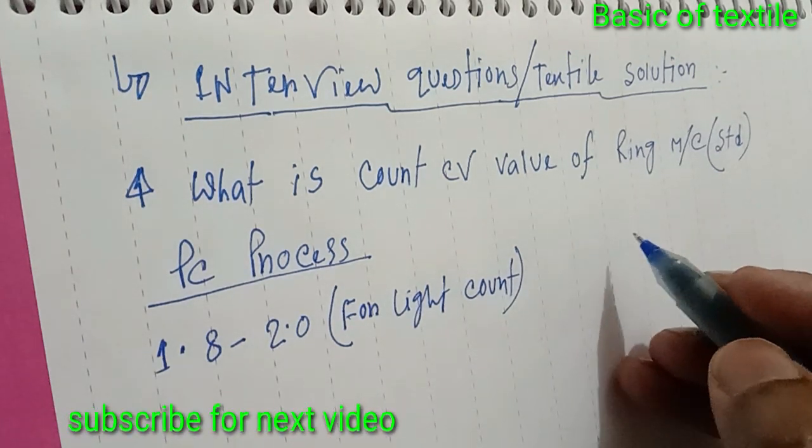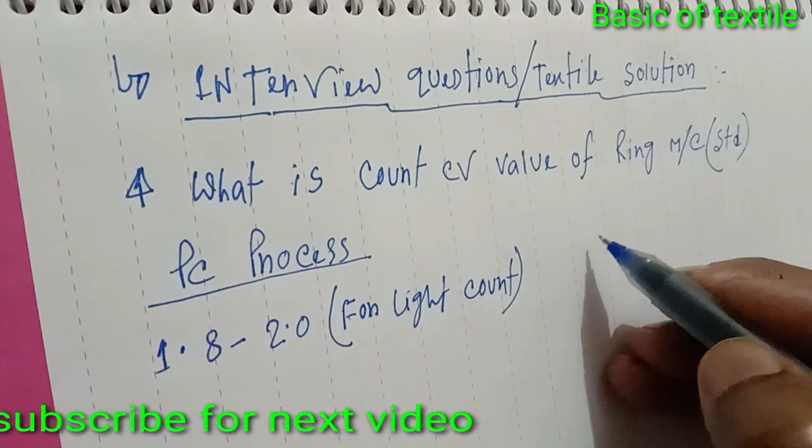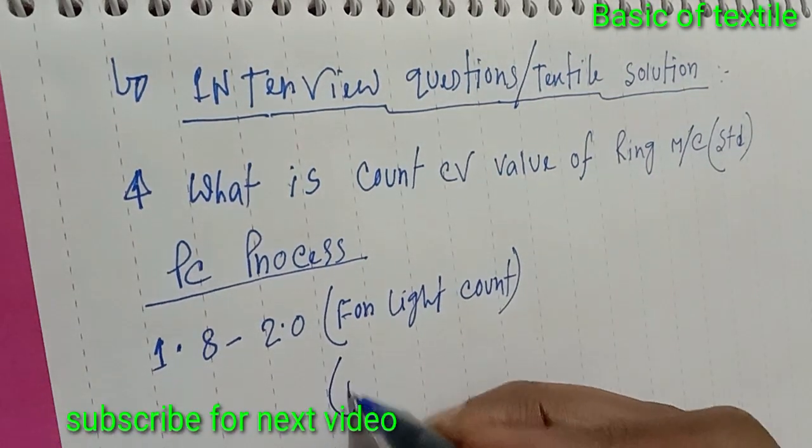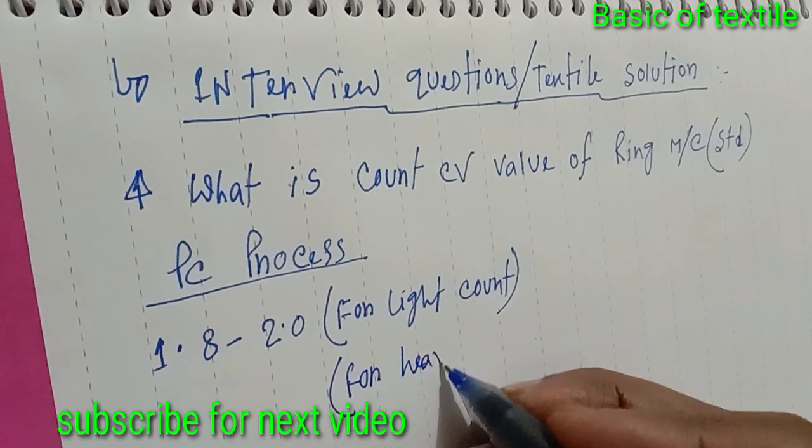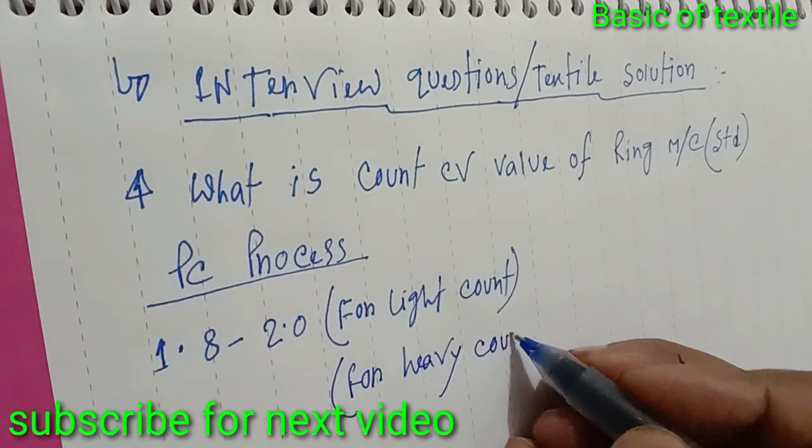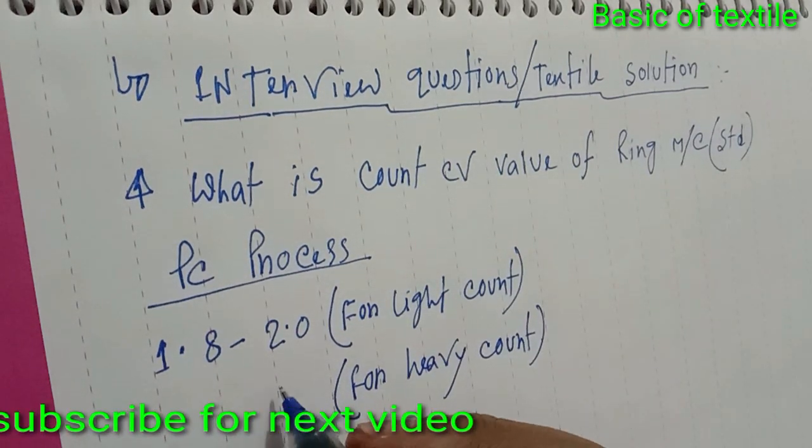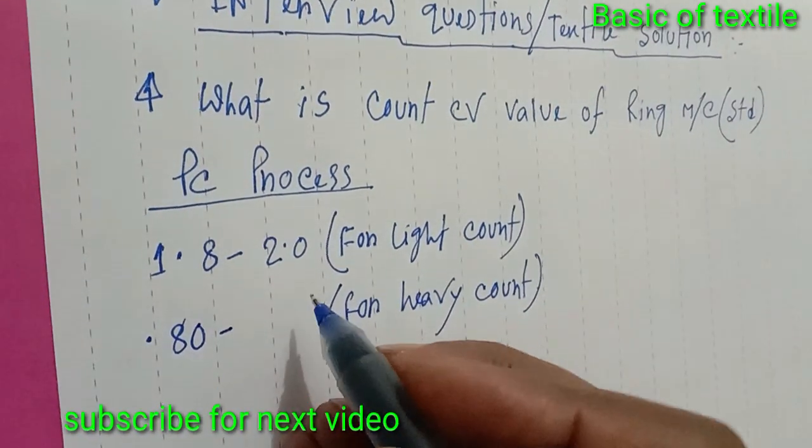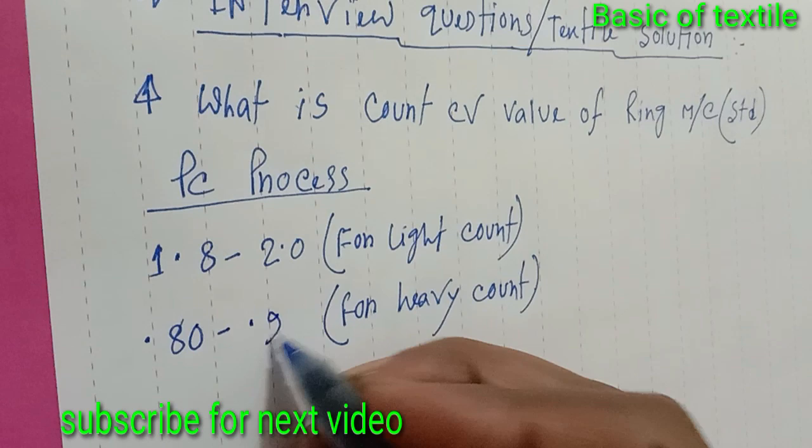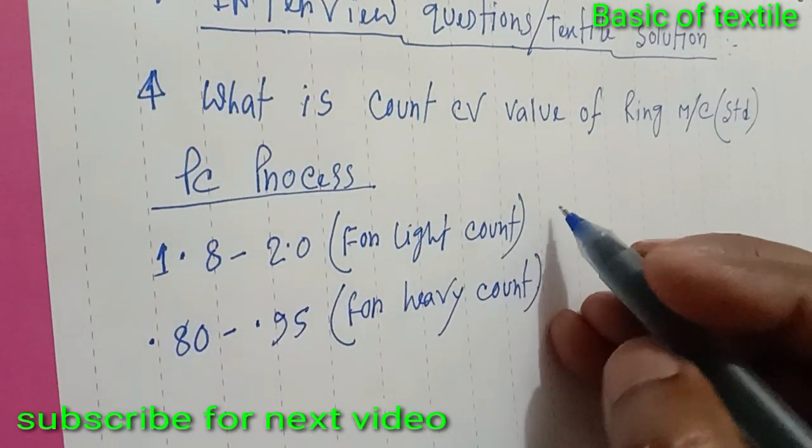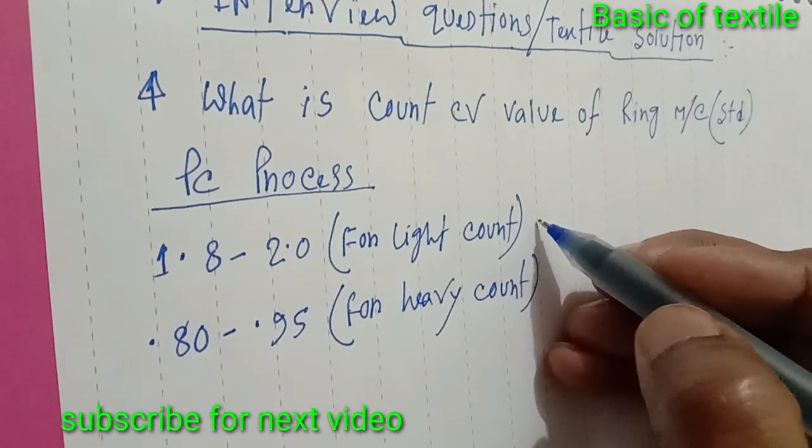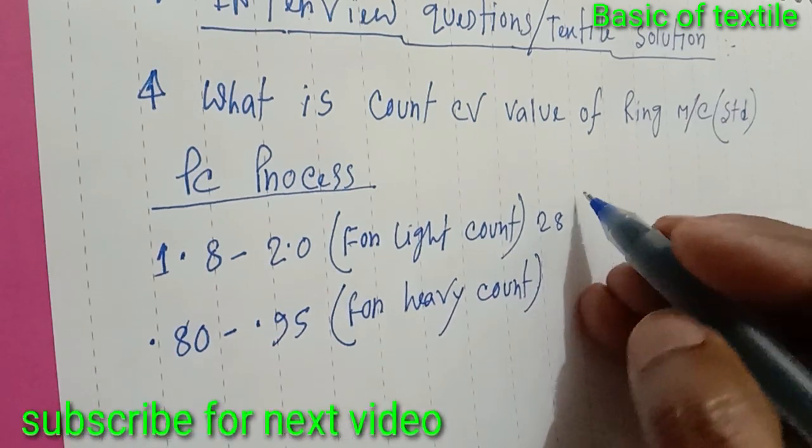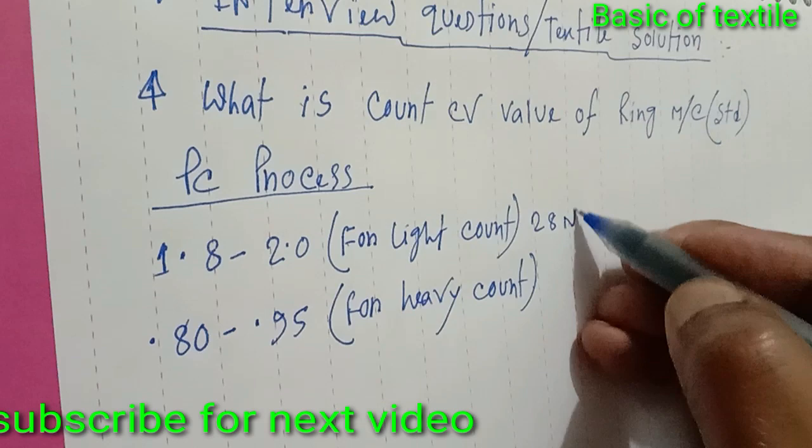Then for heavy count, 0.80 to 0.95. Light count means 28 NE and above.